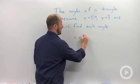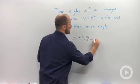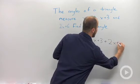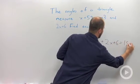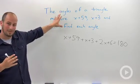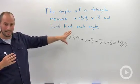So x plus 59 is one angle, plus x plus 3 second, 2x plus 6 is equal to 180. We've turned our sentences into an equation.